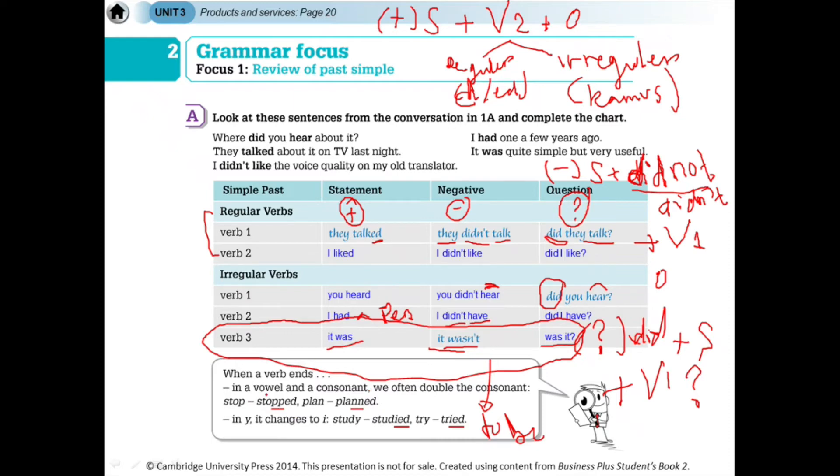In a vowel and a consonant, we often double the consonant. This is usually a condition. When adding D or ED, there are rules too. When there's a vowel followed by a consonant, double the consonant first, then add ED. Here's an example: stop. Stop has the vowel O, followed by P, a consonant. So don't directly add ED - double the consonant P first, then add ED. Same with plan. A is a vowel, N is a consonant, so double the N first, then add ED - planned. If it ends in Y, change the Y to I first. For example, study. Change the Y to I, then add ED - studied. The Y changes to I, then add ED. Another example: try. It ends in Y, so change Y to I first, then add ED - tried.